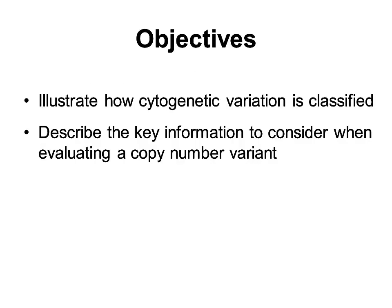We will begin by discussing cytogenetic variation in general, including various types of normal variation, basic terminology related to copy number variants, and the ACMG categories for clinical classification of copy number variants. We will then discuss the key information that is considered when evaluating a copy number variant, or CNV, and some helpful resources that are used to find it.